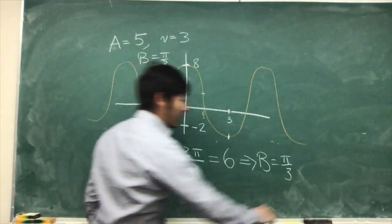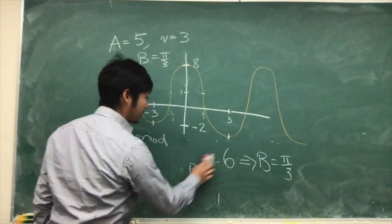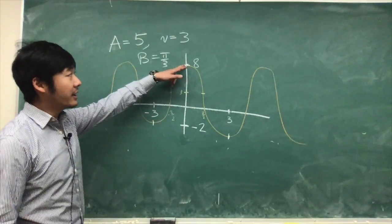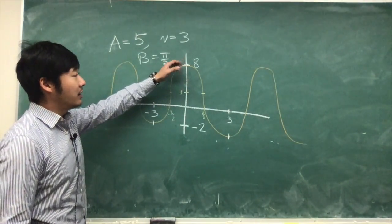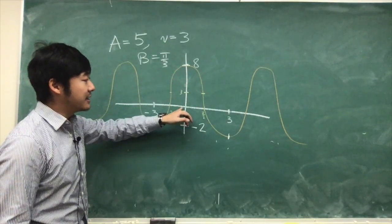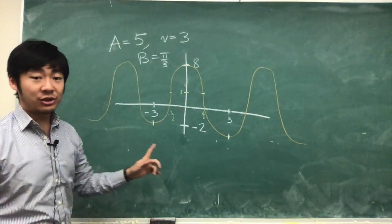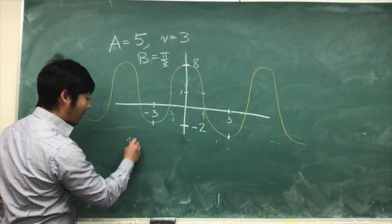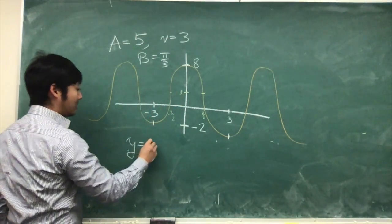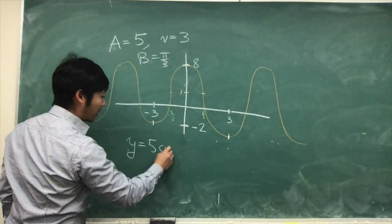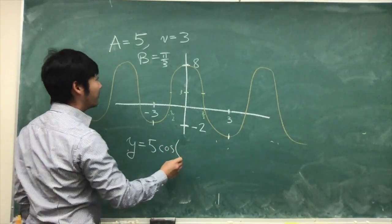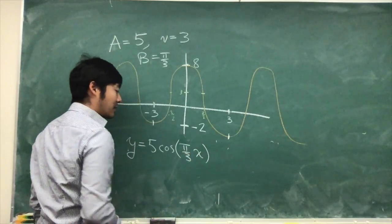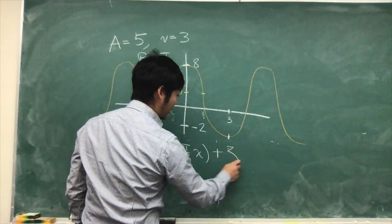Because this one is peaked at x equals 0, that means it's in the shape of cosine. So this will be y equals the amplitude, which is 5, times cosine of π over 3, which is b, times x, plus the vertical shift, which is 3.